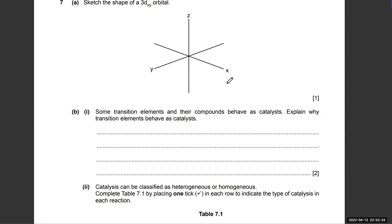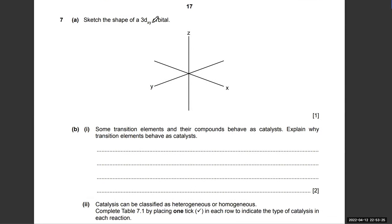Sketch the shape of a 3d xy orbital: the electron density lies between the x and y axes.